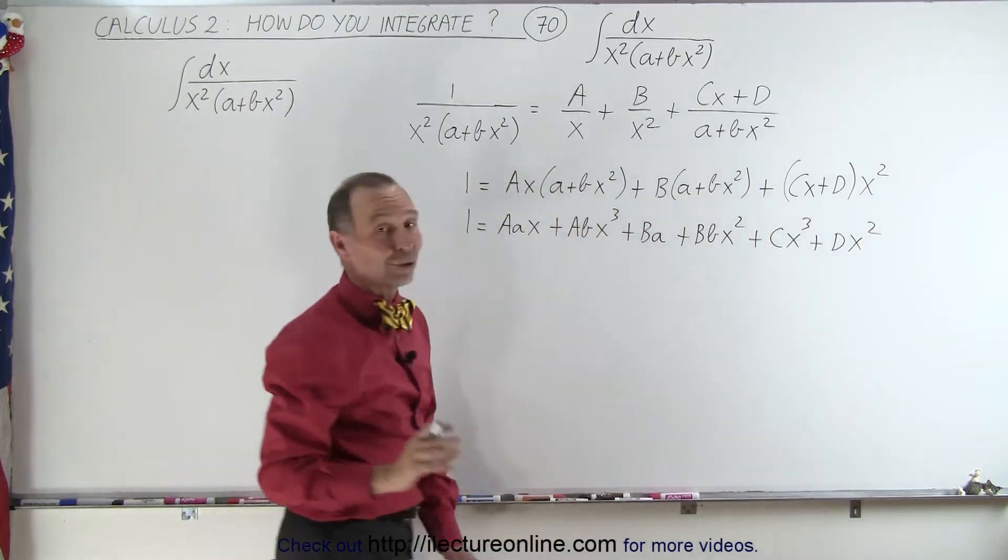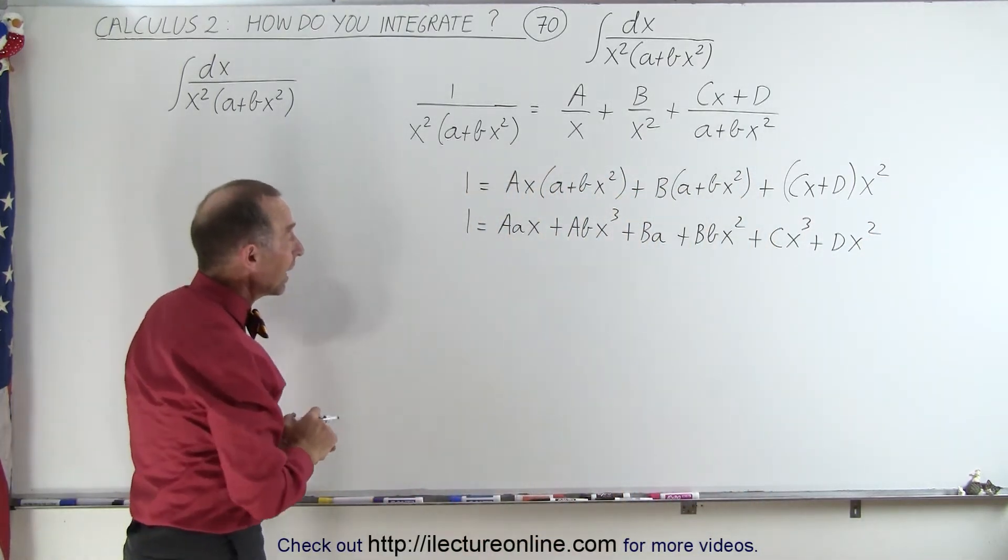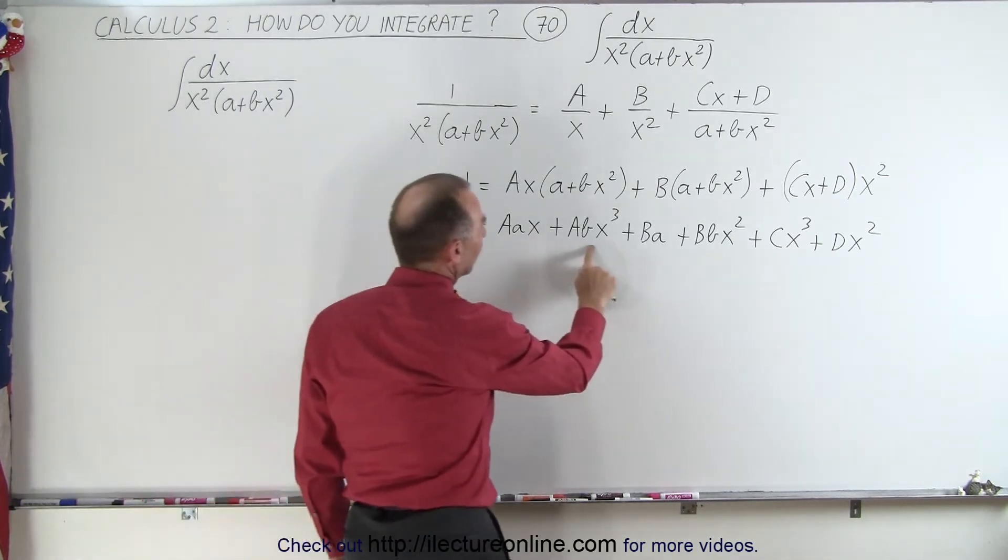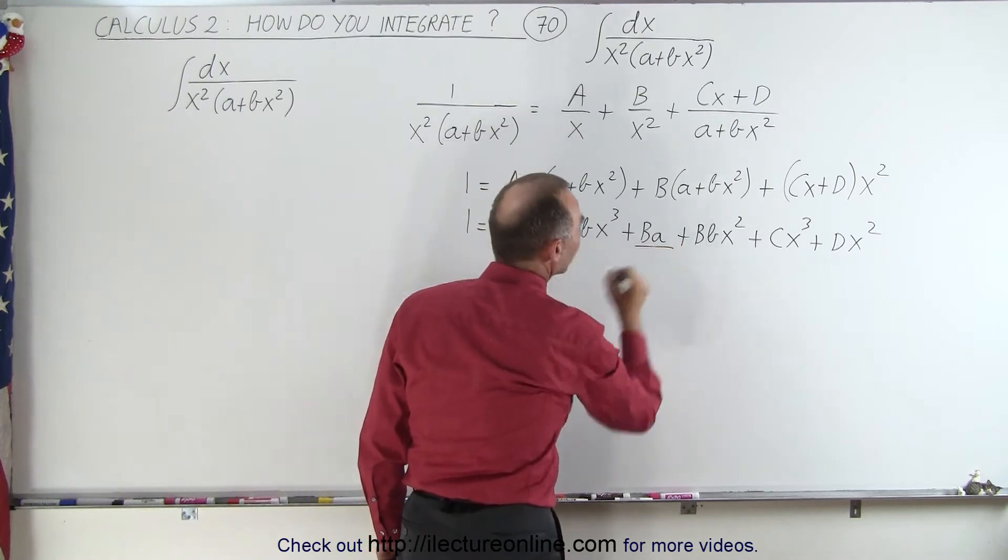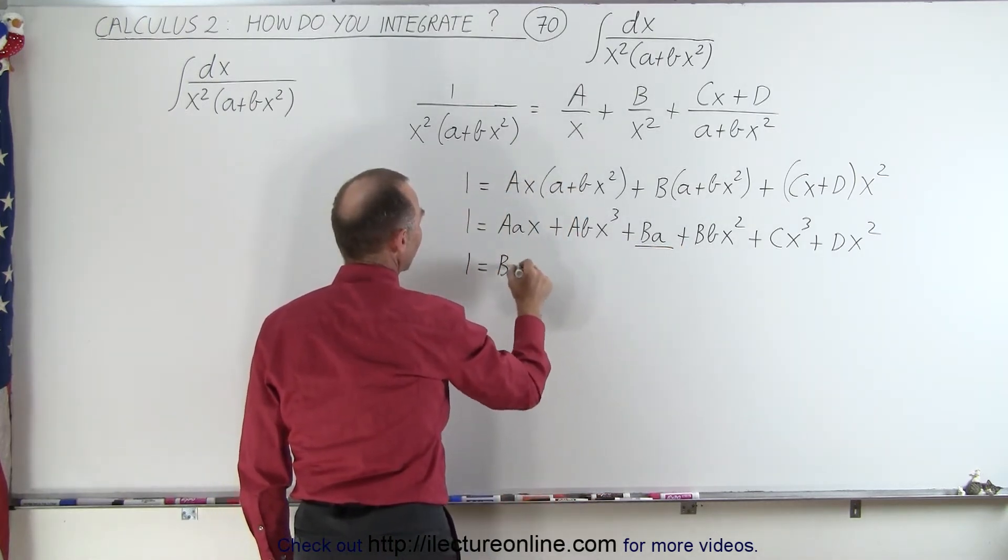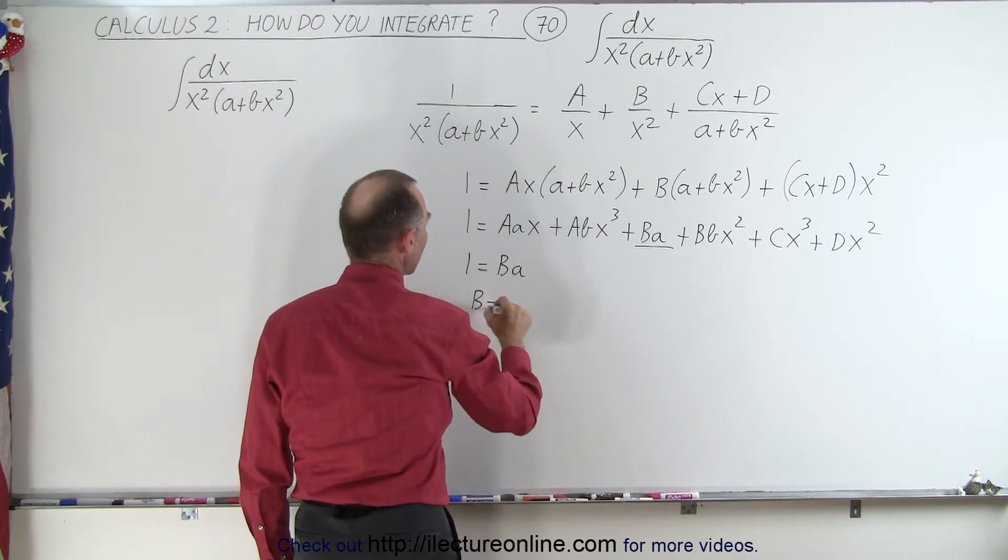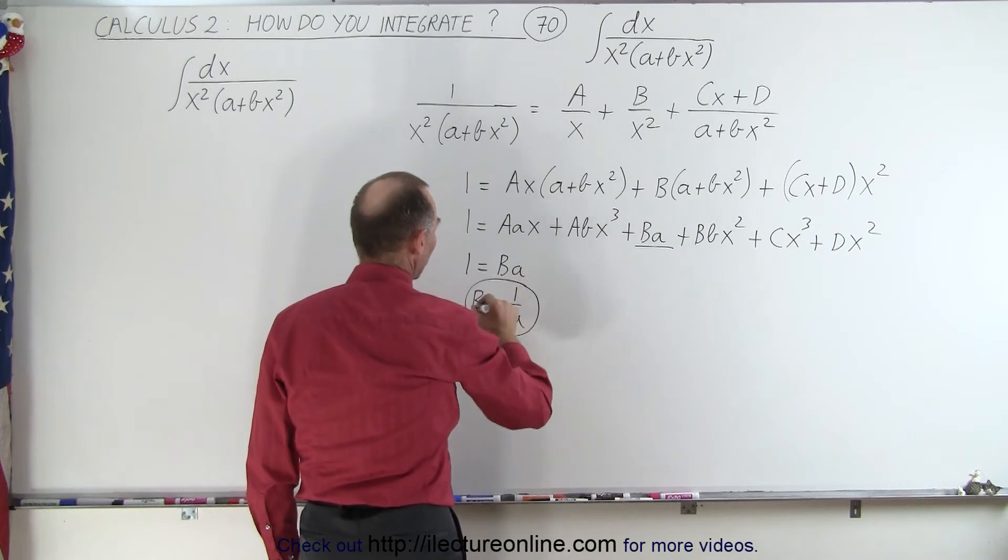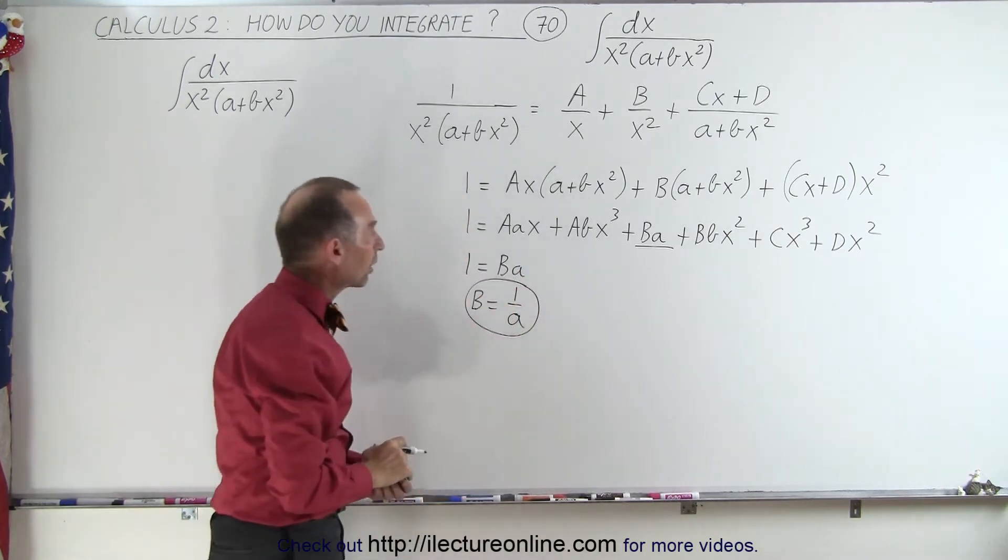plus Cx cubed plus Dx squared. A lot of terms on the right side and only one on the left side. Notice we have a constant on the left side and we have a single constant on the right side, which means that 1 must equal B times a, which means that B equals 1 divided by a. So we already figured out one of our four constants.